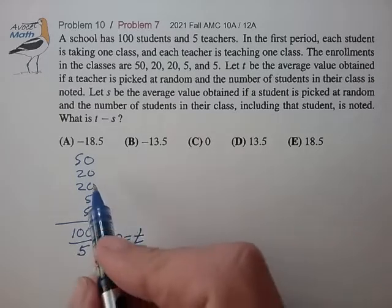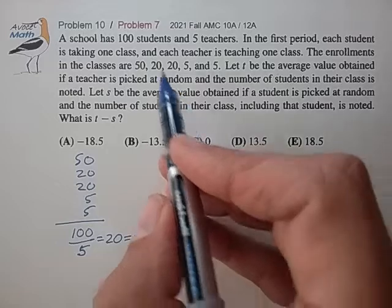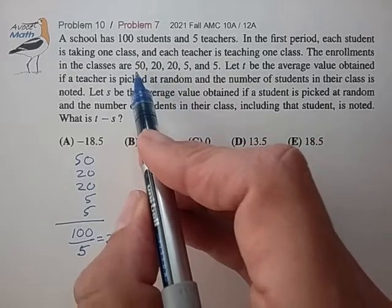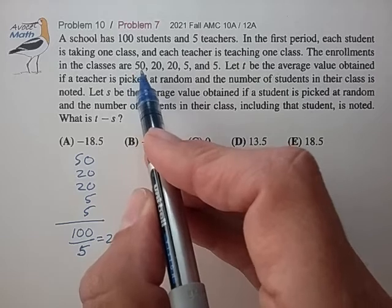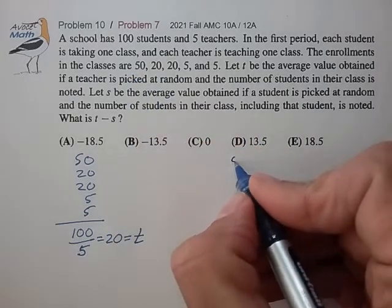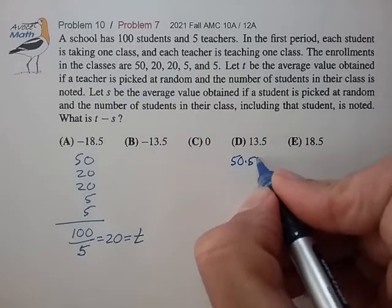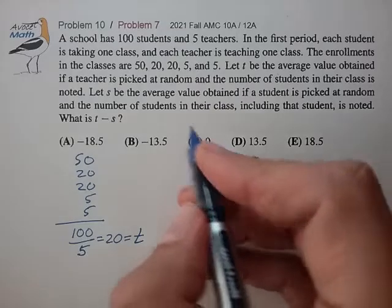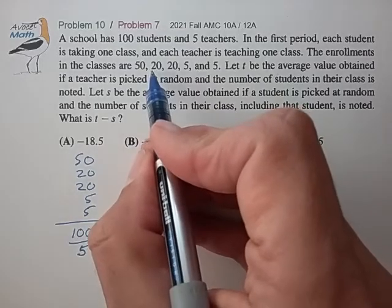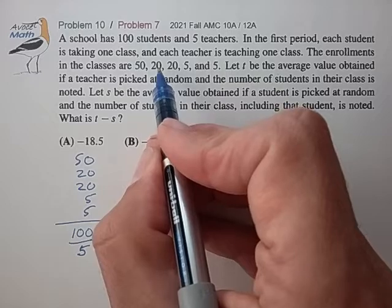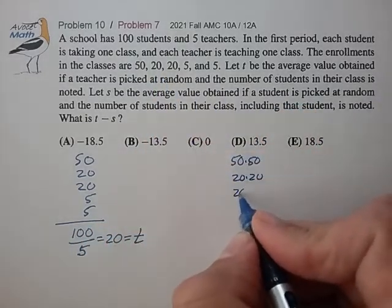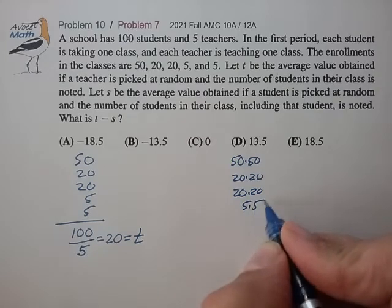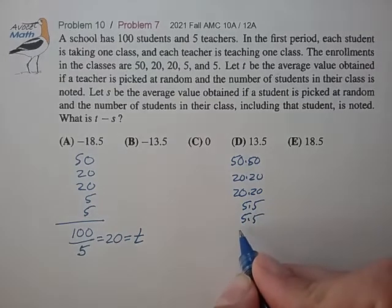Now, if instead of the teachers, we're asking the students, then in the first class, we'll have 50 students, each claiming to have 50 students in their class, so that's 50 times 50. For the second class, we'll have 20 students, each claiming to be 20 in their class. 20 times 20, 20 times 20, 5 times 5, 5 times 5.